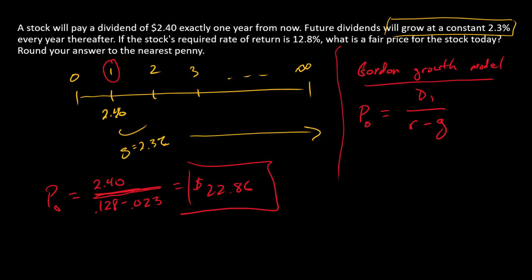At this point, I do want to make a quick note that the numerator in the Gordon growth model always needs to be the dividend at time one. If I provided D0 instead of D1—if I said $2.40 is a dividend that was just paid—that would be D0. We would have to convert that to D1 in the numerator.